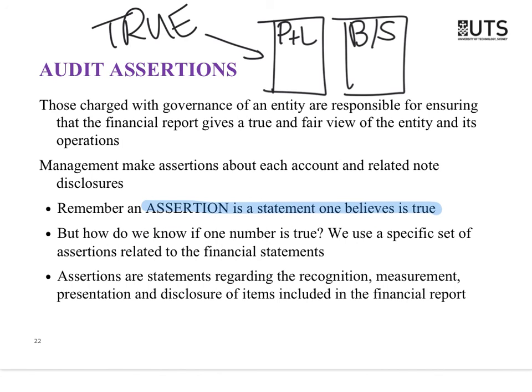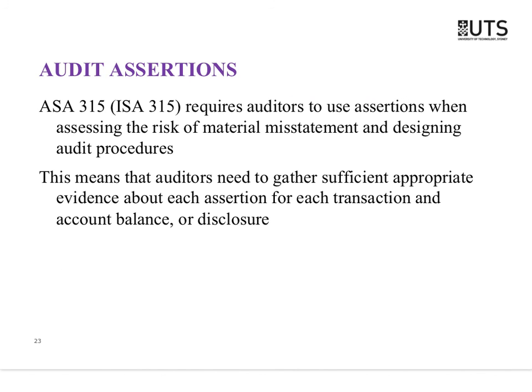Every single number that management put on the financial statements is their assertion about what they believe is true. We are going to use something called the financial statement assertions out of ASA 315 to determine whether they are true. These give us specific rules on what evidence to collect — because if you just said 'collect evidence to prove sales are true,' you wouldn't know where to start. So I'm going to go through these assertions.